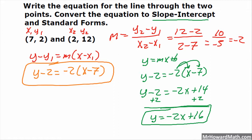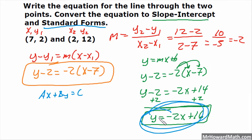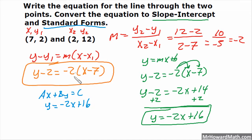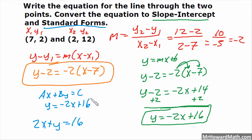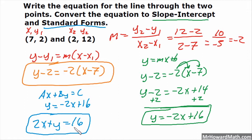Now standard form. Standard form is ax plus by equals c. So I am going to start with my slope-intercept: y equals negative 2x plus 16. Standard form has x and y on the same side, so I am going to take this negative 2x and move it to the other side — its sign changes. So it would be positive 2x plus y equals 16. The y stayed positive because it didn't move, and the 16 stayed positive because it didn't move. So 2x plus y equals 16 is the standard form answer.